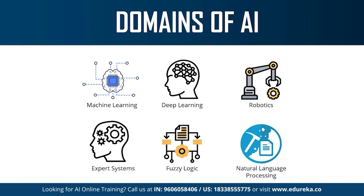Deep learning, or neural networks, is a process of implementing neural networks on high-dimensional data to gain insights and form solutions. It is the logic behind Facebook's face verification algorithm, self-driving cars, and virtual assistants like Siri and Alexa. Natural language processing refers to the science of drawing insights from natural human language to communicate with machines and grow businesses. Twitter uses NLP to filter terroristic language in tweets, and Amazon uses NLP to understand customer reviews and improve user experience.